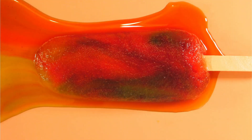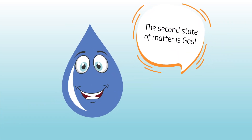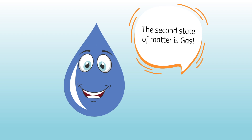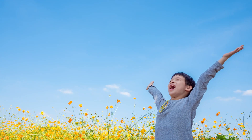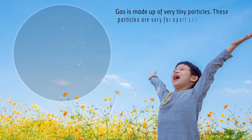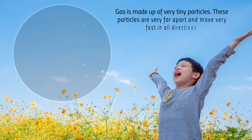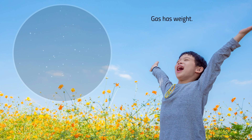After some time of being out in the freezer, I will melt and will turn into a liquid again. The second state of matter is gas. You are always surrounded by gases. Gas is made up of very tiny particles. These particles are very far apart and move very fast in all directions.